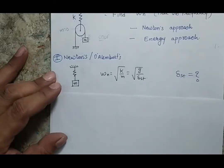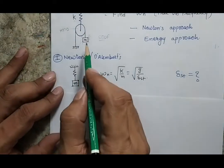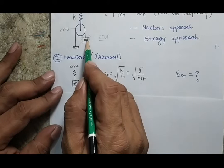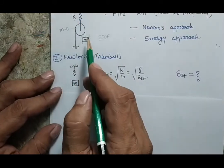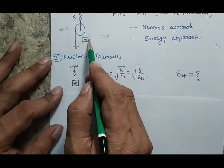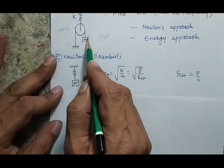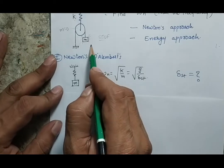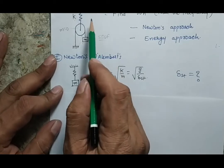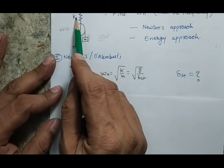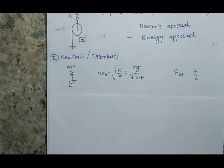But this is a very special case. Now we have to understand, by looking at this system, that if the motion of the mass is x, whether the deflection in the spring is x or something else. So first we have to see this system and understand the geometry of this system.